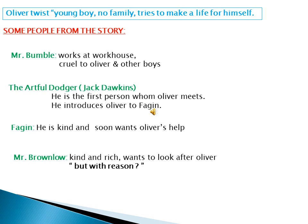Another character is the Artful Dodger, meaning Jack Dawkins. He is the first person whom Oliver meets when Oliver goes to London. He introduces Oliver to Fagin. Another character is Fagin. Fagin is very kind and soon wants Oliver's help in this novel. Another character is Mr. Brownlow. He is kind and rich and he wants to look after Oliver, but there is a reason behind it.